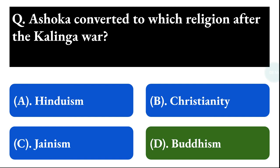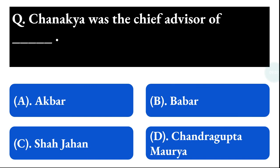Next question: Chanakya was the chief advisor of — option A: Akbar, option B: Babur, option C: Shah Jahan, option D: Chandragupta Maurya. The correct answer is option D, that is Chandragupta Maurya.